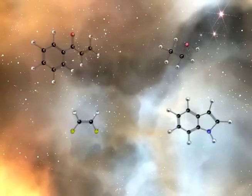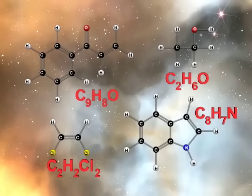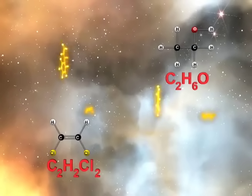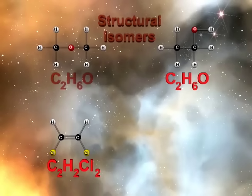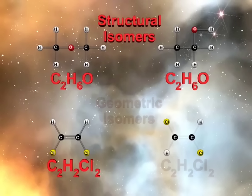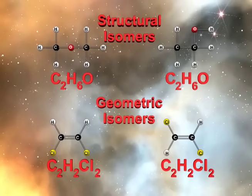However, looking at a two-dimensional Lewis structure of a molecule affords much information to the scientist, for example, the overall connection of atoms within the molecular formula. After all, different structural and geometric isomers can be imagined from relatively simple molecular formulas.